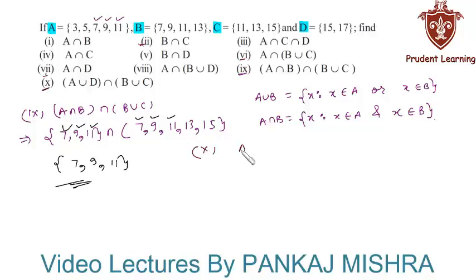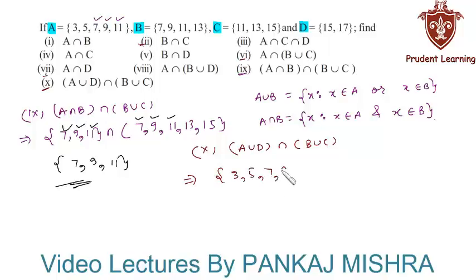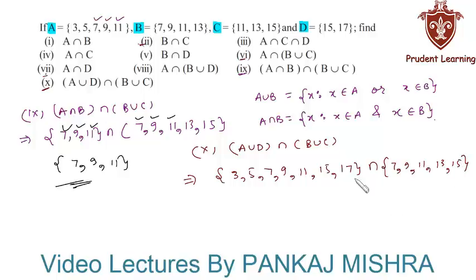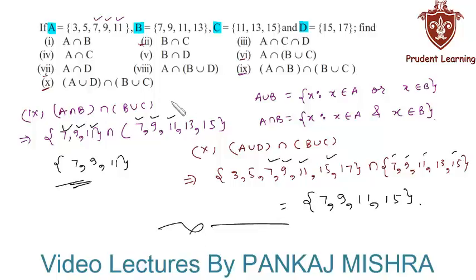In the last section we have (A union D) intersection (B union C). A union D means clubbing all elements of set A and set D, giving us {3, 5, 7, 9, 11, 15, 17}. B union C gives us {7, 9, 11, 13, 15}. The common elements are 7, 9, 11, and 15, so (A union D) intersection (B union C) = {7, 9, 11, 15}. This completes our solution.